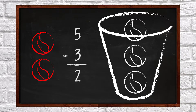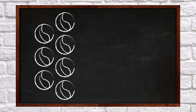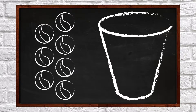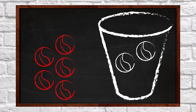Here is another example. We have seven marbles. If I subtract two of the marbles, then I have five marbles left. We write it like this: seven minus two equals five.